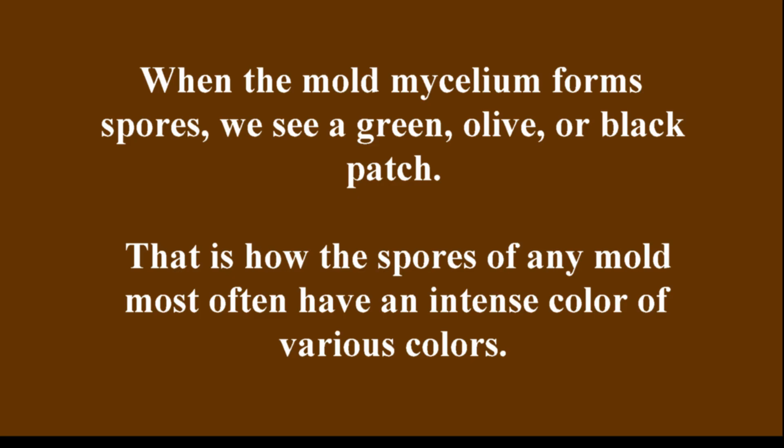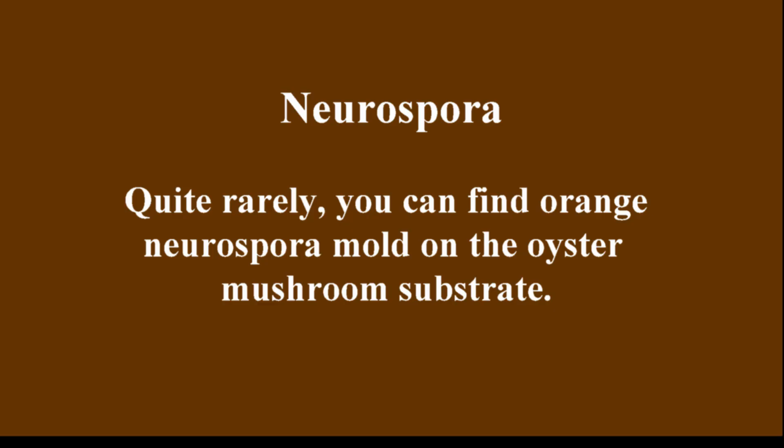When the mold mycelium forms spores, we see a green, olive, or black patch — that is how the spores of any mold most often appear, with an intense color of various colors. Mold sporulation occurs on the 10th–13th day of the incubation period of mycelium overgrowth. Quite rarely, you can find orange Neurospora mold on the oyster mushroom substrate. It can be seen already on the 3rd or 4th day from inoculation, as it produces spores very quickly.